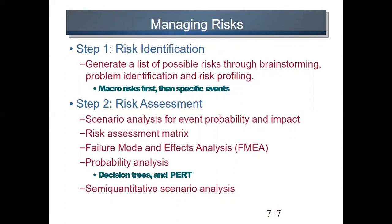One common mistake made early in the risk identification process is to focus on objectives and not on the events that could produce consequences. For example, team members may identify 'failing to meet schedule' as a major risk. What they need to focus on are the events that could cause this to happen.